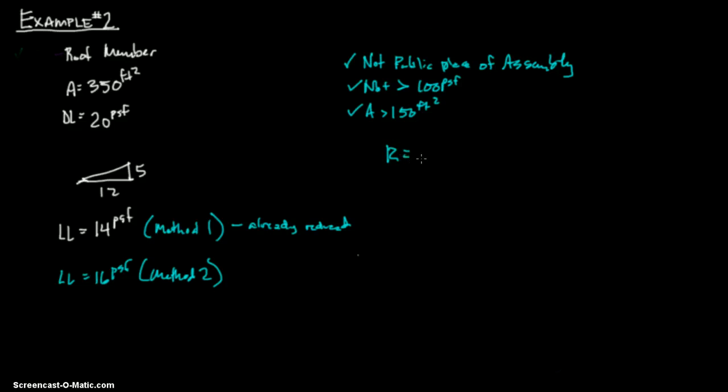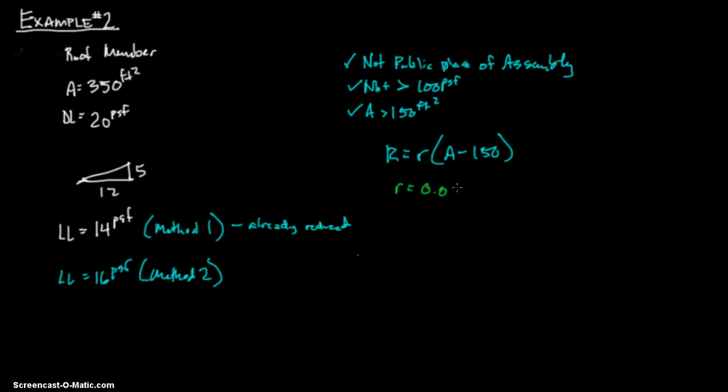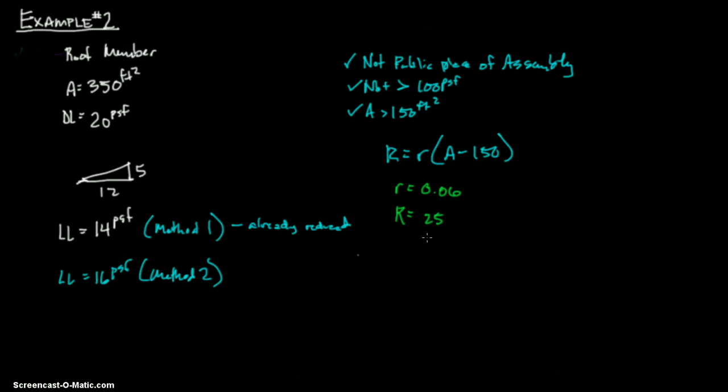Then we want to use that formula R equals little r A minus 150. Again. And just remember to be meticulous when you're going through this, so you don't make a mistake, because it can be a little bit confusing. So we know our live load is 16. And we need to reduce that by what? So we want to go back to that table 16-C. And we see that the rate of reduction ratio, or rate of reduction R, equals, we're at second, so that's 0.06. And then the big R, just go over one more, equals 25.